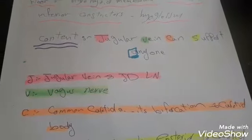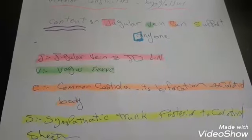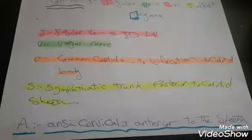S for sympathetic trunk, and it is posterior to the carotid sheath. A for ansa cervicalis, it is anterior to the sheath. Thank you for watching.